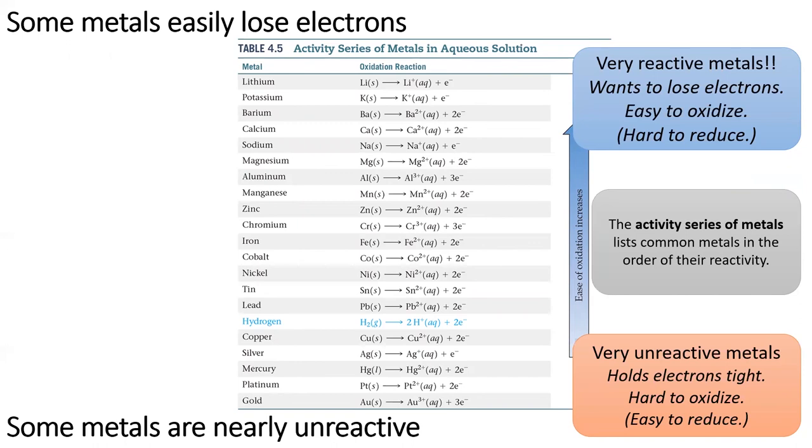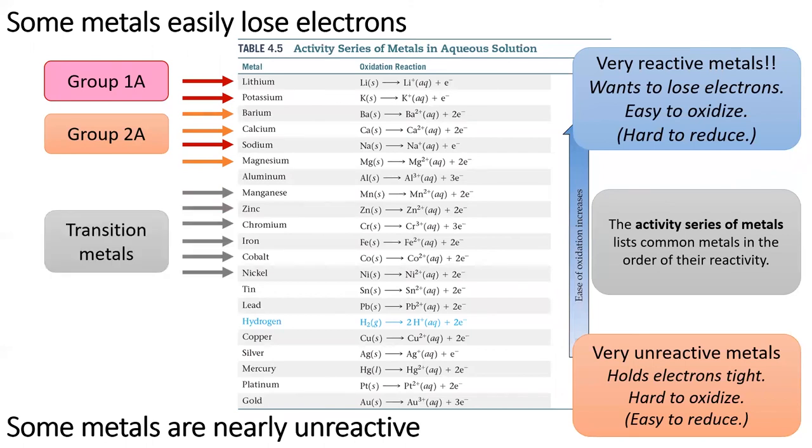The group 1A metals are all at the top of the list because they're easy to give their electrons away. They're very reactive. The group 2A metals are also near the top of the list and are also quite reactive. Transition metals like zinc, iron, and nickel are right in the middle of the periodic table. These metals have a wide variety of uses both in industry and in biology due to their medium reactivities.